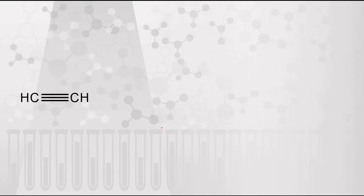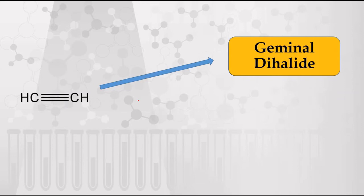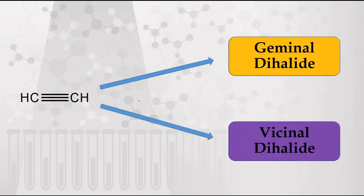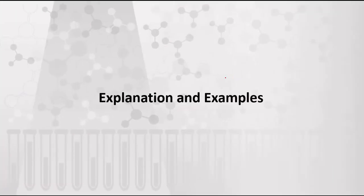We will now see the next reactions. We will see how the triple bond of an alkyne is converted into a geminal dihalide, and the other reaction where it is converted into a vicinal dihalide. We will see these reactions in detail and explain how we prepare vicinal dihalide and geminal dihalide.